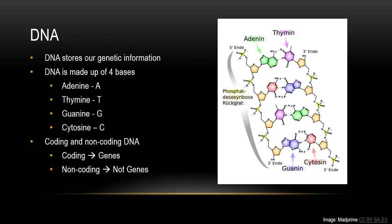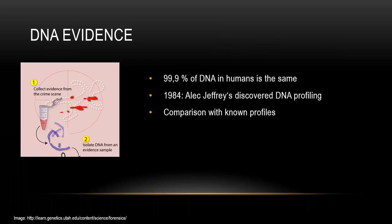DNA stores our genetic information. It's a different kind of code — made up of four bases: adenine, thymine, guanine, and cytosine, abbreviated A, T, G, and C. Adenine always binds thymine and guanine always binds cytosine. There is coding and non-coding DNA: coding DNA is genes — everything that shows up in your looks — and non-coding DNA is everything outside of your genes. Both are important.